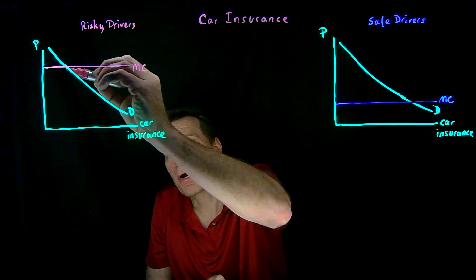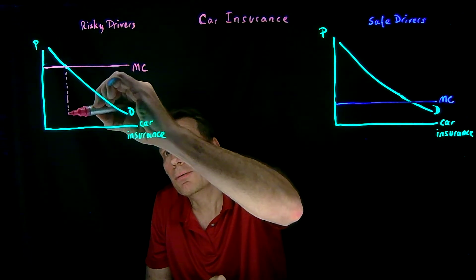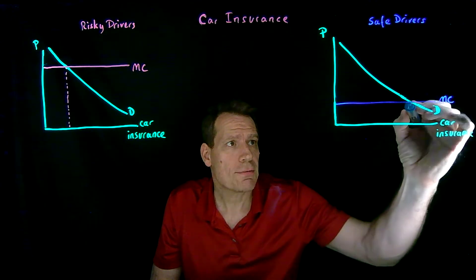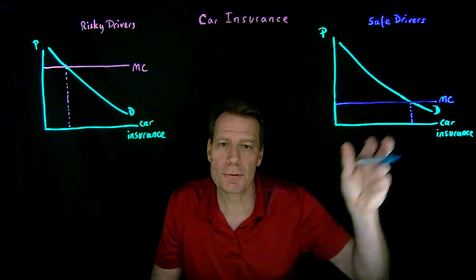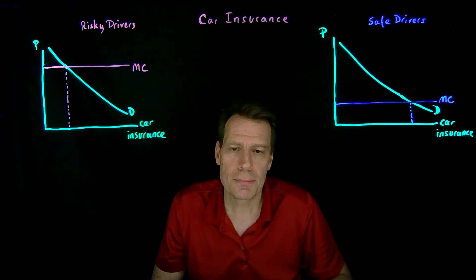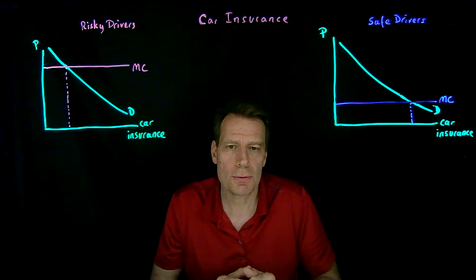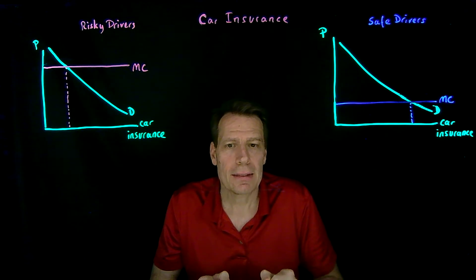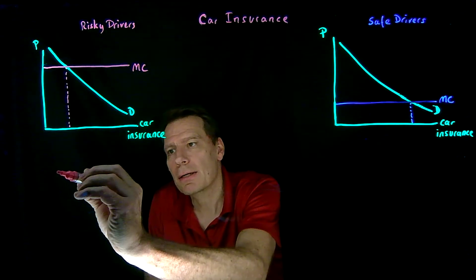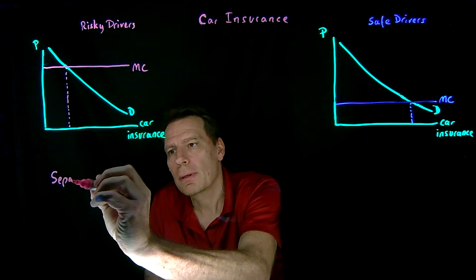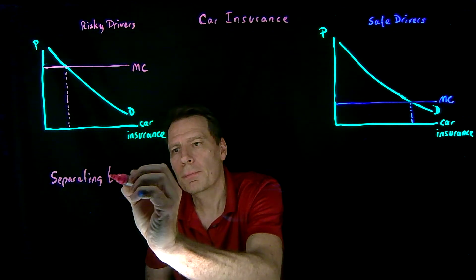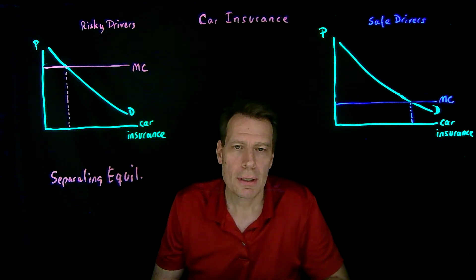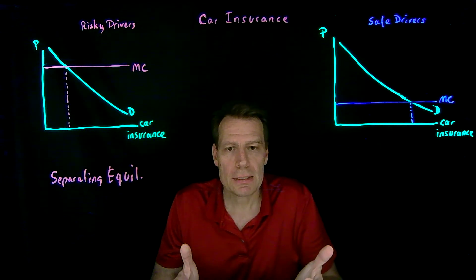As a result, risky drivers are going to buy relatively less generous insurance policies than safe drivers, at least if their demand curves are roughly similar. But what if we can't tell the difference between the two drivers? Then we can't treat them separately, and what we call a separating equilibrium can't emerge. A separating equilibrium can only emerge if we can tell the difference between these different types of drivers.